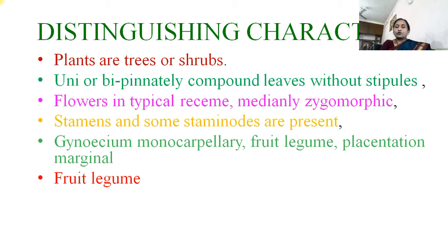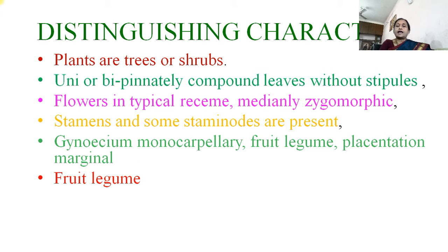The gynoecium is monocarpellary. The fruit is a legume and placentation is marginal. This is a very characteristic feature, which is very similar to the related families Fabaceae and Mimosaceae, and that is why it was placed in the family Leguminosae due to the legume fruit.